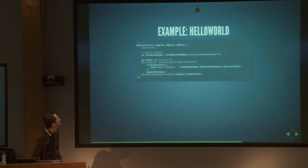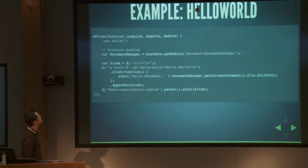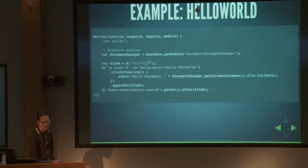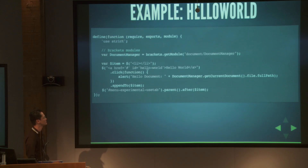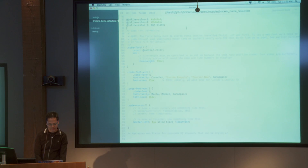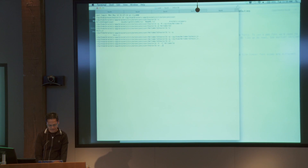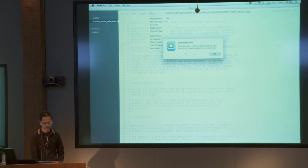Let me bump up the font size on this. So this is a simple hello world module — it adds a menu item that says 'Hello Document' and gets the current document's filename from DocumentManager. It's very similar to the simple module Peter showed before, except it calls brackets.getModule for DocumentManager. If I copy that folder into Brackets and reload — Command-R is a handy way to quickly reload — the menu item now appears and tells me what the current document is.